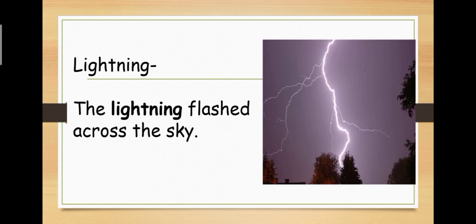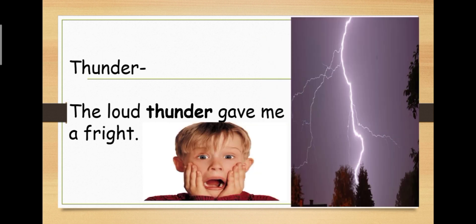Next, lightning. The lightning flashed across the sky. Yani lightning, yani bijli chamki asmaan mein. Next, thunder. Sentence. The loud thunder gave me a fright. The loud thunder gave me a fright. Yani thunder ki tez awaz se mujhe kya hua? I was frightened. Frightened matlab?